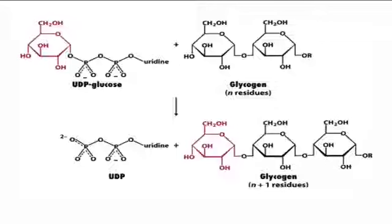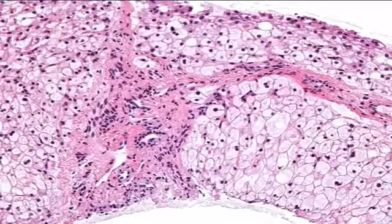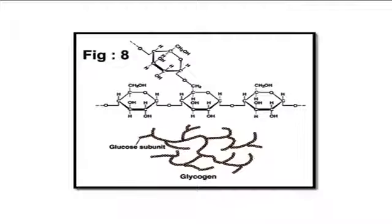The next polysaccharide is glycogen. Glycogen is the storage polysaccharide in animals, mainly present in liver. It is a branched-chain polysaccharide resembling amylopectin but with more branching, as shown in Figure 8 on your screen.